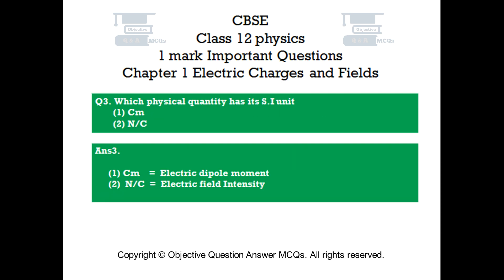Question number 3. Which physical quantity has its SI unit as: Number 1 — Coulomb-centimeter, and Number 2 — Newton per Coulomb? Answer number 3. Number 1: Electric dipole moment has its SI unit as Coulomb-centimeter. Number 2: Electric field intensity has its SI unit as Newton per Coulomb.